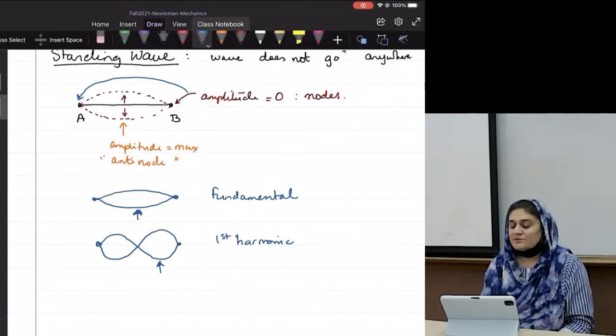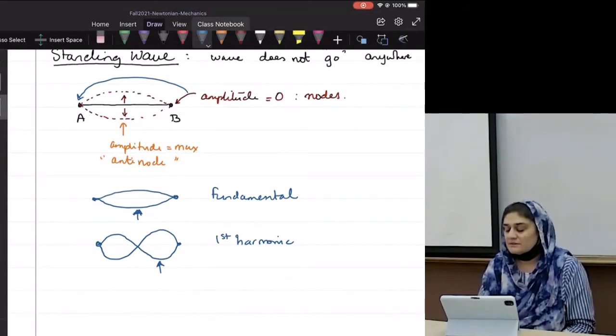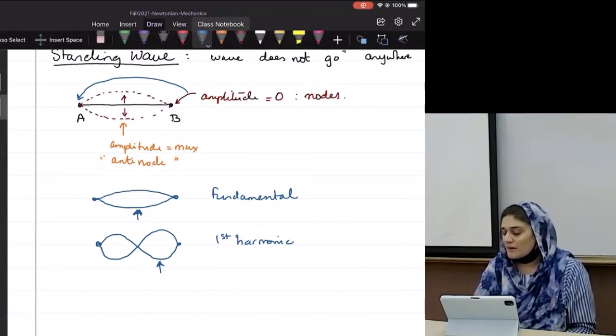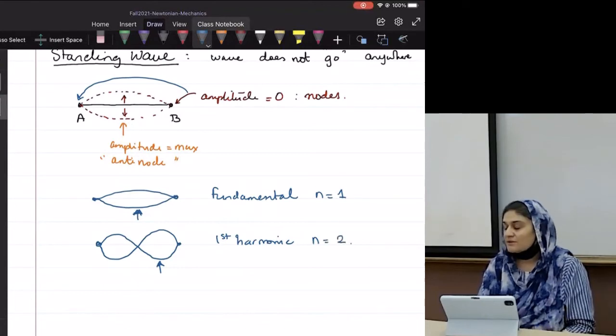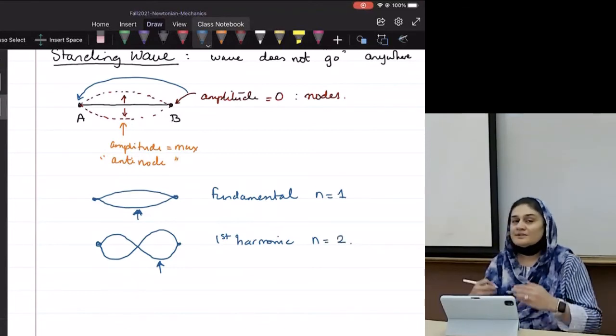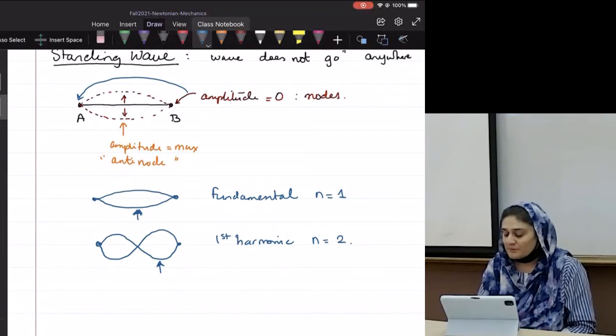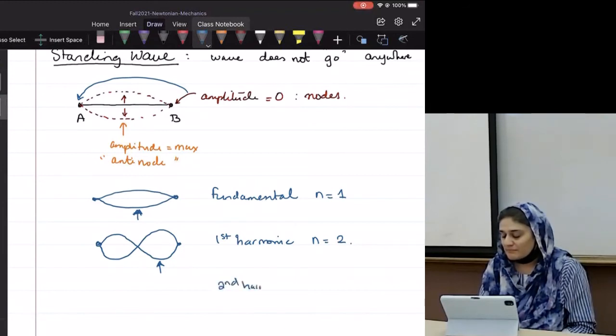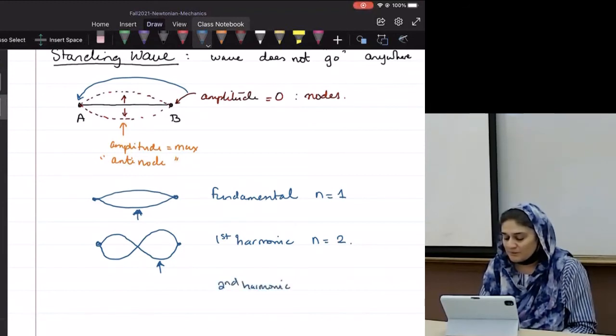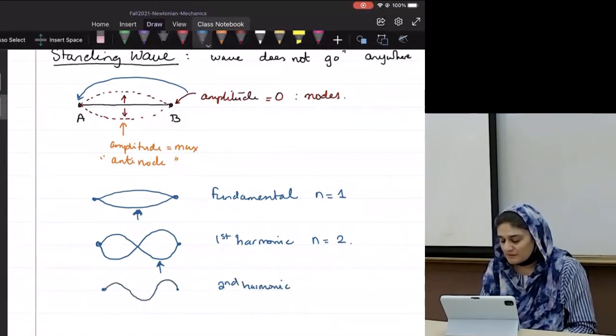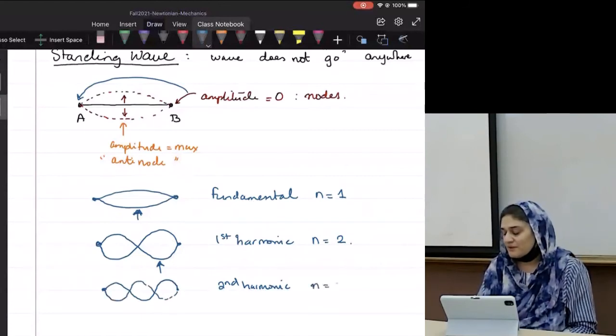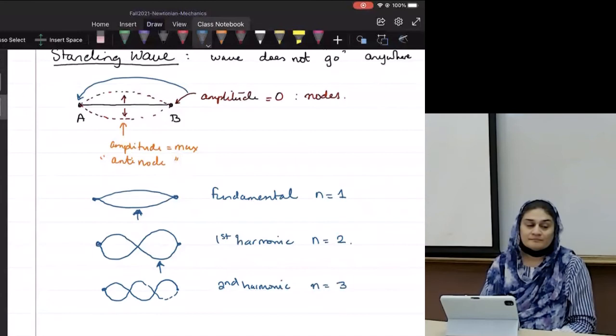How many anti-nodes are there in the fundamental? One. How many anti-nodes are there in the first harmonic? Two. And so on. Then there will be a second harmonic. What will that look like? Same points A and B. And N will be equals to three, and so on and so forth.